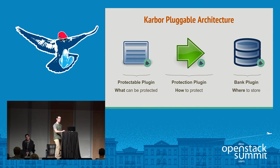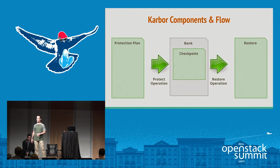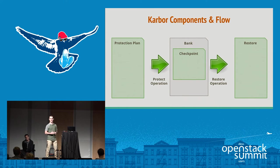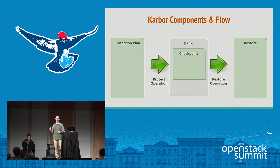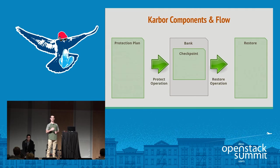Karbor components work together in a basic flow: you have a protection plan, which is a recipe for creating checkpoints. Checkpoints are stored in the bank and contain all information sufficient to perform a restore. A restore represents a running restore process for your application. These three stages happen across a large amount of time — you may protect your application at one point in time, store it in the bank for a period, and only when you need it perform a restore.